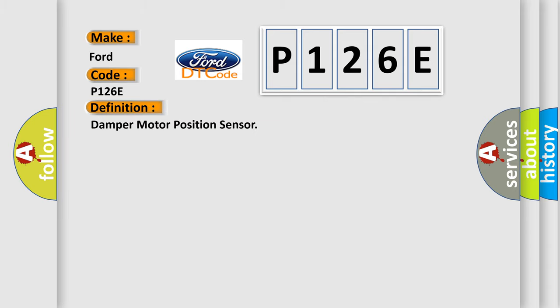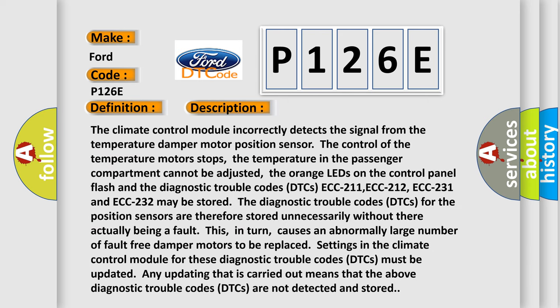The basic definition is: Damper Motor Position Sensor. The climate control module incorrectly detects the signal from the temperature damper motor position sensor. The control of the temperature motors stops. The temperature in the passenger compartment cannot be adjusted. The orange LEDs on the control panel flash, and the diagnostic trouble codes ECC 211, ECC 212, ECC 231, and ECC 232 may be stored.